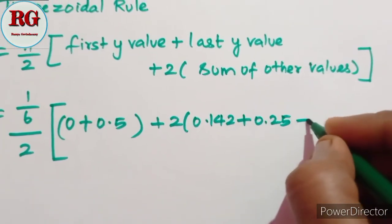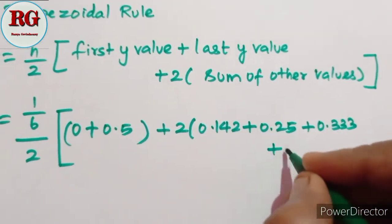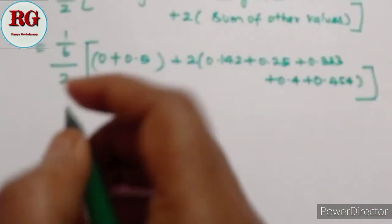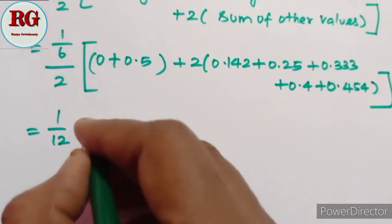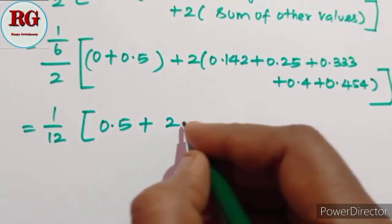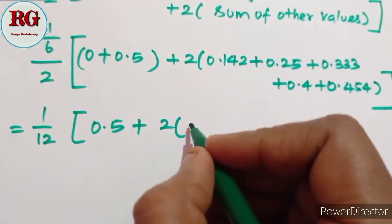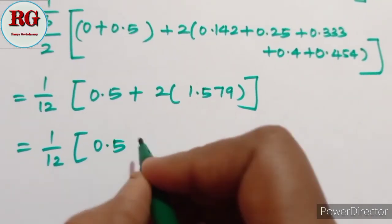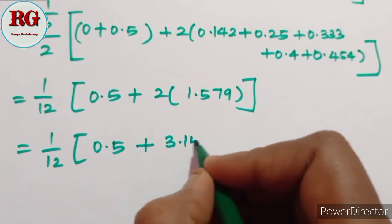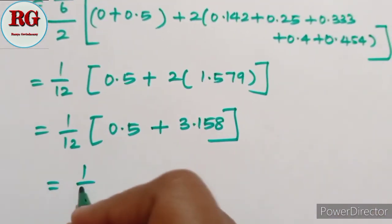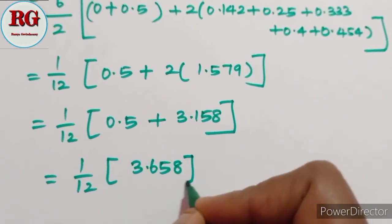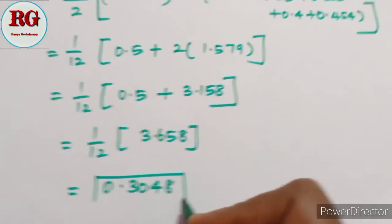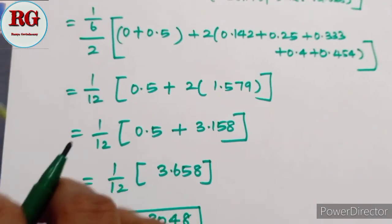Collecting the values: 0.333 plus 0.4 plus 0.454. Now applying the trapezoidal formula: h/2 times [first plus last plus 2 times (sum of middle values)], which is (1/12) multiplied by (0.5 plus 2 times 1.579). That gives (1/12) multiplied by (0.5 plus 3.158), adding to 3.658. Dividing: 3.658 divided by 12 equals 0.3048. The trapezoidal result is approximately 1.995.